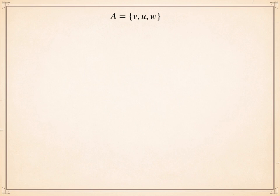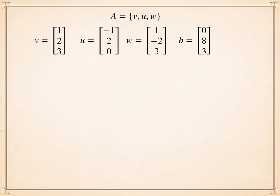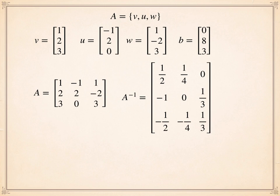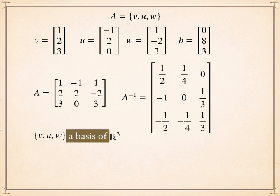Now let's look at a different set of vectors v, u, and w. We're still looking at the same vector b = (0, 8, 3). From vectors v, u, w, I can form a matrix A whose column vectors are v, u, and w. I found the inverse matrix of A, and since I could find the inverse, this matrix is non-singular. Since we're in R3 and we have three vectors, the set v, u, w is a basis of R3 — so we have another basis of R3.